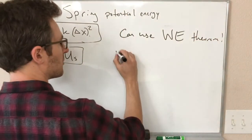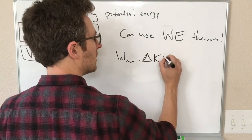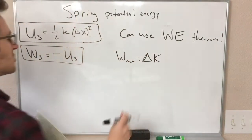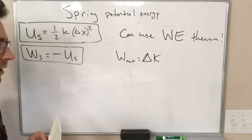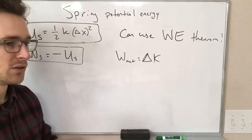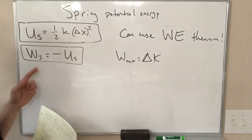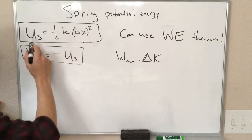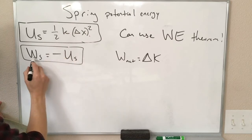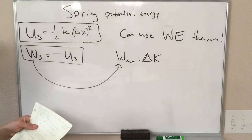Remember our work energy theorem is the net work is the change in the kinetic energy. And now this net work might have a lot of pieces in it: gravity, us pushing on it, friction, maybe there's also a spring. And if we know something about how the spring changes its compression, we know how the potential energy changes. And if we know how the potential energy changes, we can use the work in that equation.